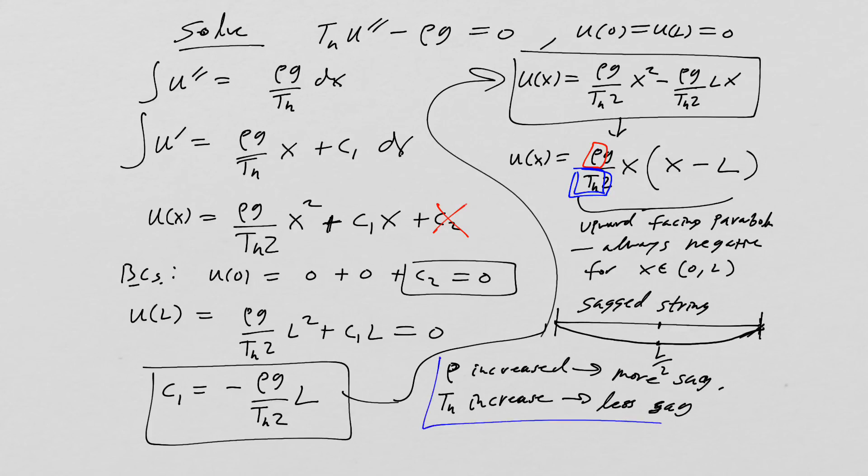So those are really neat phenomena that show up from this sagged string. I hope this example just demonstrated how the mechanics of the wave equation and also how all the parameters work together to find these non-homogeneous equilibrium solutions to the wave equation. I will leave this video now, and I'll hope to see you soon in the next video.